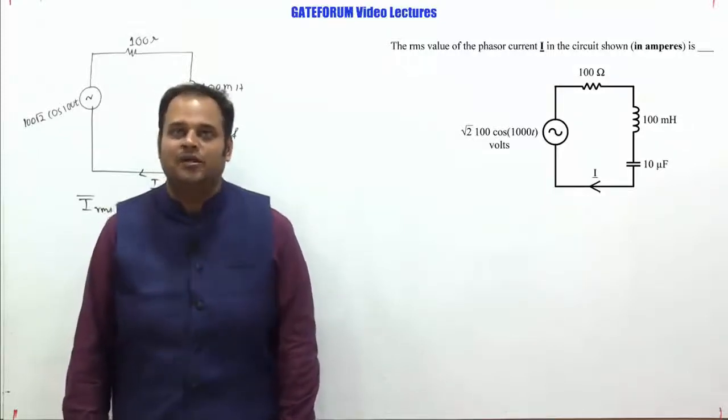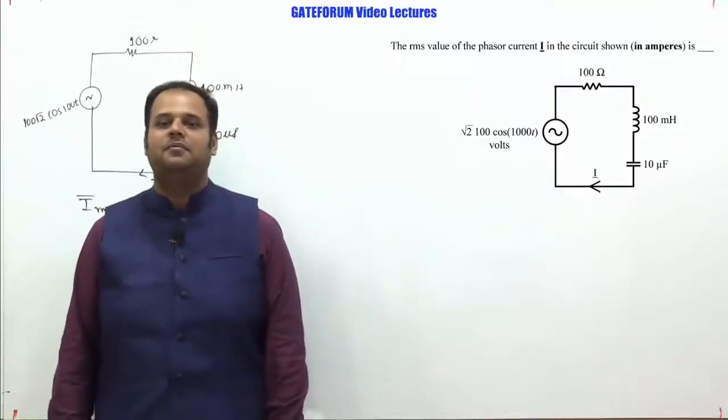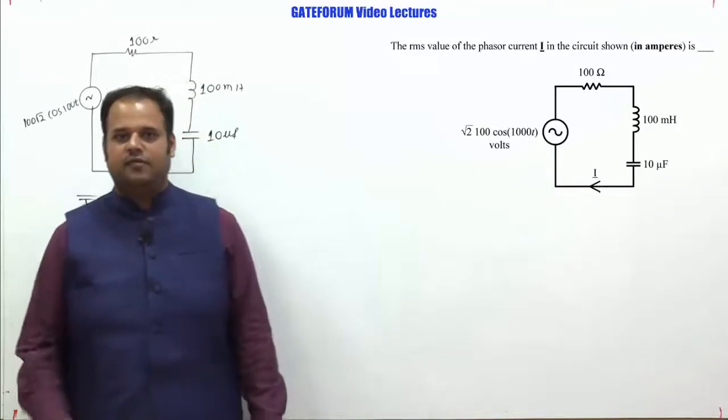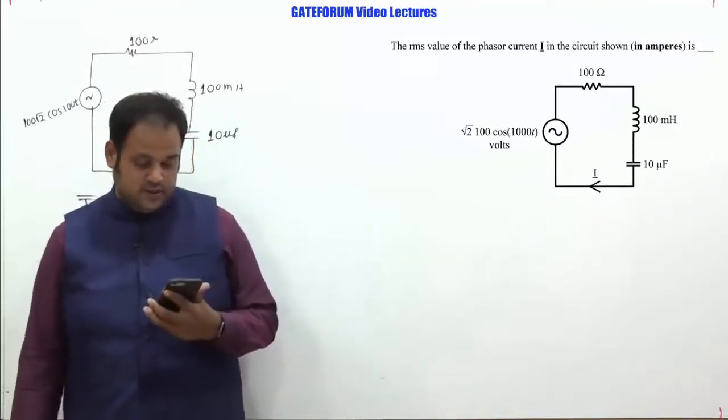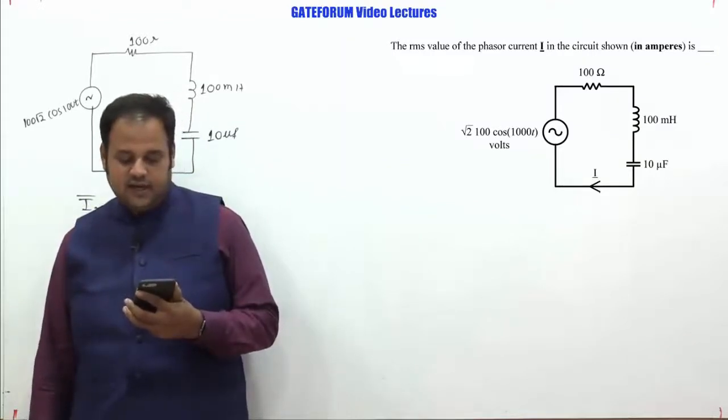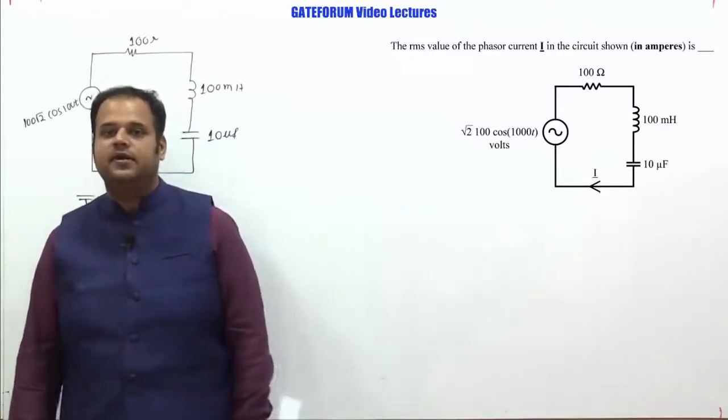This is one more question asked in GATE 2020 instrumentation. This is from network theory subject and from AC circuit chapter. The given question is: the RMS value of the phasor current I in the circuit shown in amperes is how much.